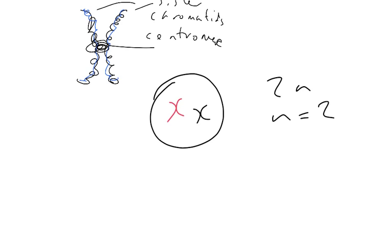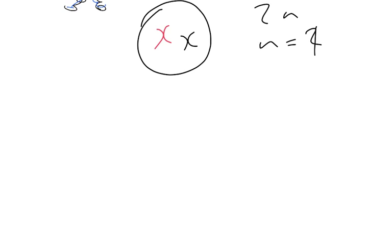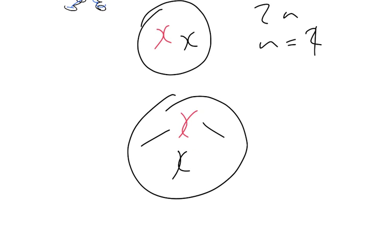so N equals 1. So that 2N cell is then going to line up and get pulled apart.